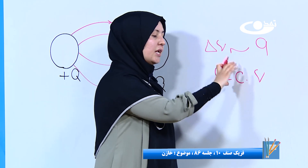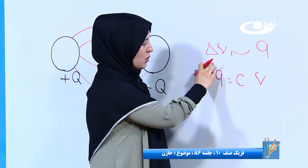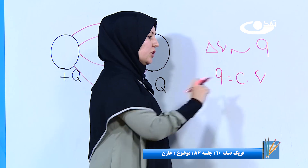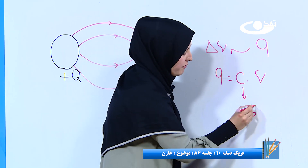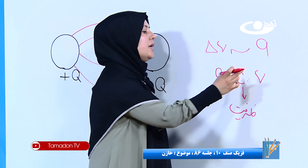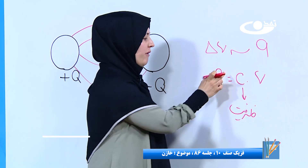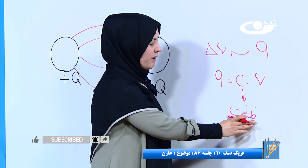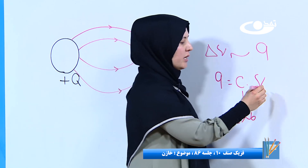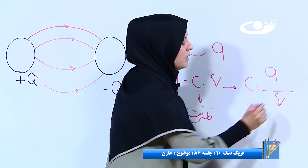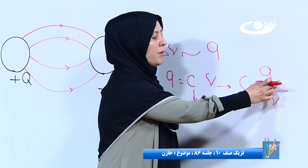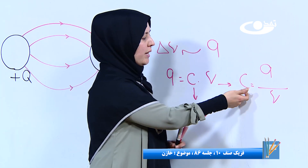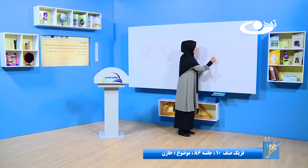برای اینکه دو طرف تناسب را با هم برابر قرار دهیم، یک ثابت اضافه می‌کنیم. می‌نویسیم: Q مساوی است با C ضرب V. مقدار چارج برابر است با ثابت ضرب تفاوت پتانسیل. این ثابتی که در این رابطه آمد را نامش را می‌گذاریم ظرفیت. یعنی هر خازن یک ظرفیتی دارد. اگر بخواهیم ظرفیت را جداگانه بنویسیم: C مساوی است با Q بر V.